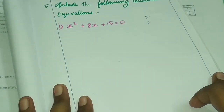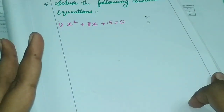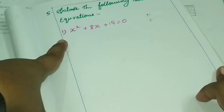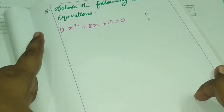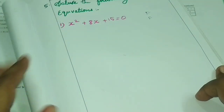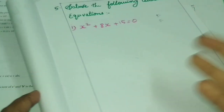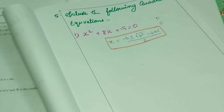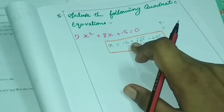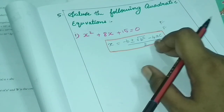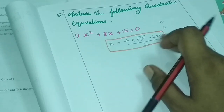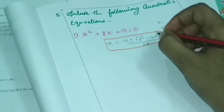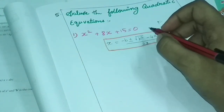Now we will see the two methods. First, we will use the formula method. The formula is: x is equal to minus b, plus or minus the square root of b squared minus 4ac, all divided by 2a.